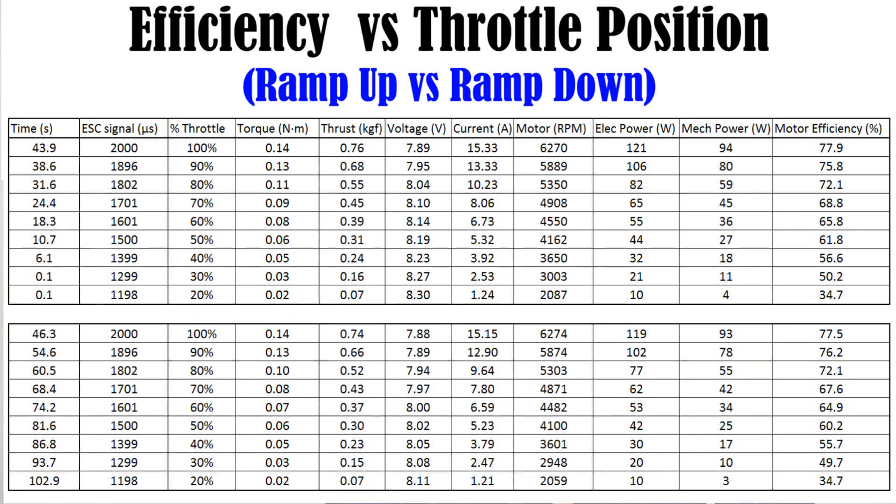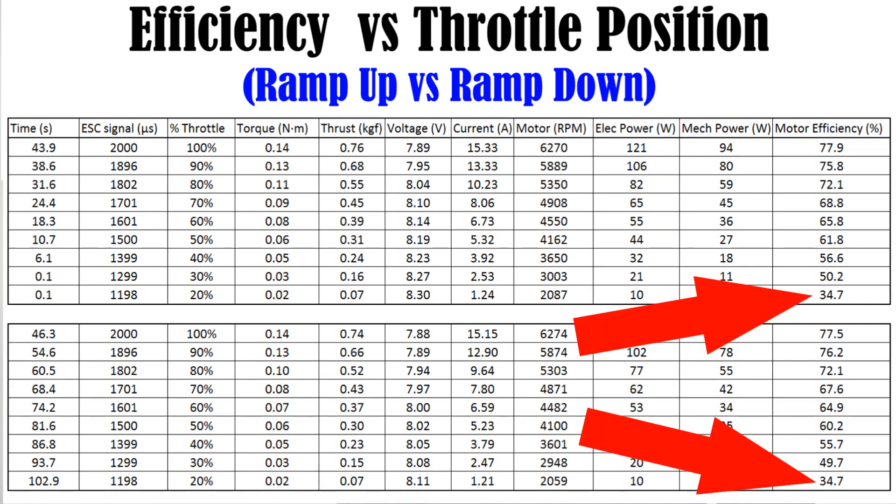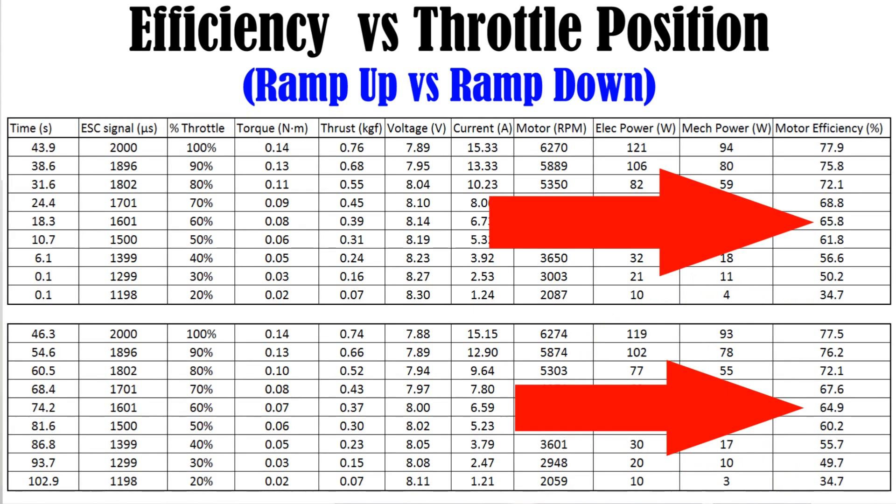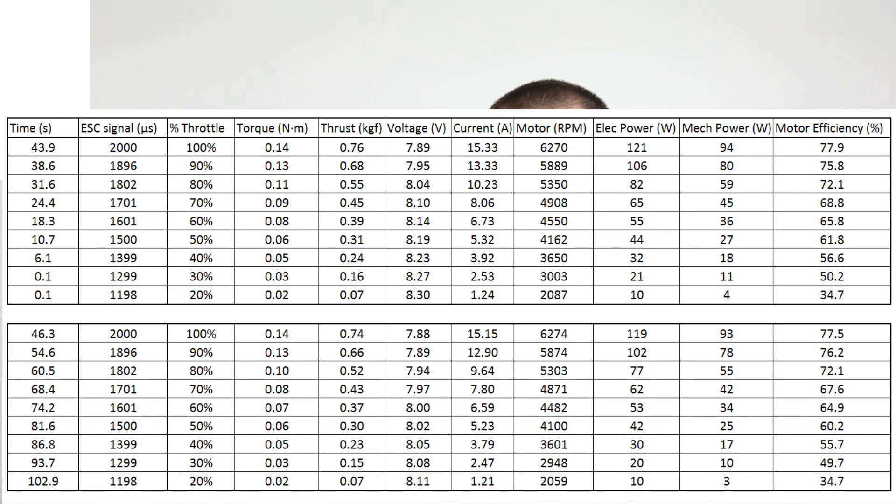As we predicted before the experiment, this chart comparison shows us that there's not that much of a difference when it comes to the actual efficiencies of our system versus the throttle position when that battery pack had more voltage versus when it had lesser voltage because of the capacity that we've pulled out of that pack.